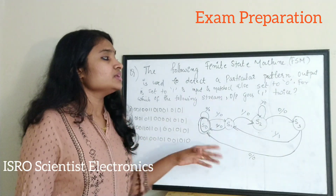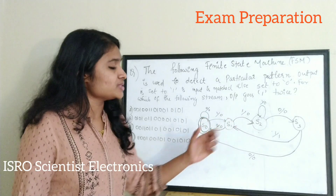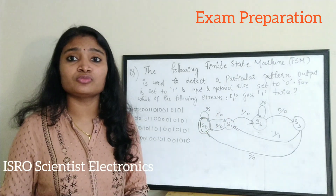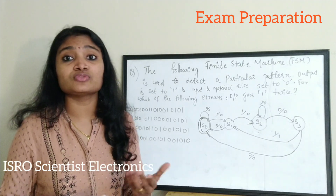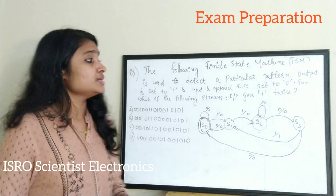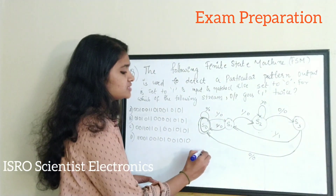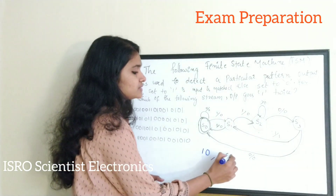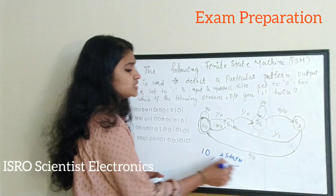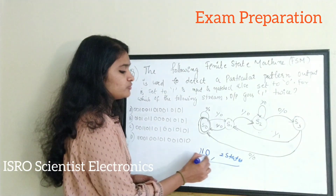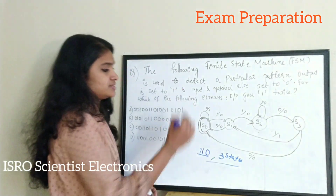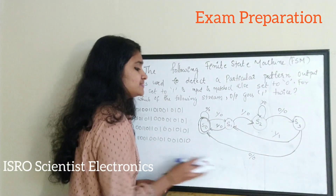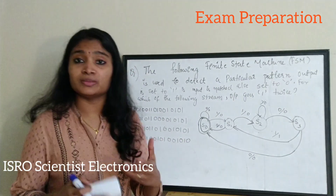For a Mealy machine sequence detector, if there are n number of bits in the sequence it requires n number of states to detect it. For example, if you are going to detect the sequence 1 0 — which consists of 2 bits — it requires 2 states. If it consists of 3 bits it requires 3 states. That is the rule for a Mealy state machine.